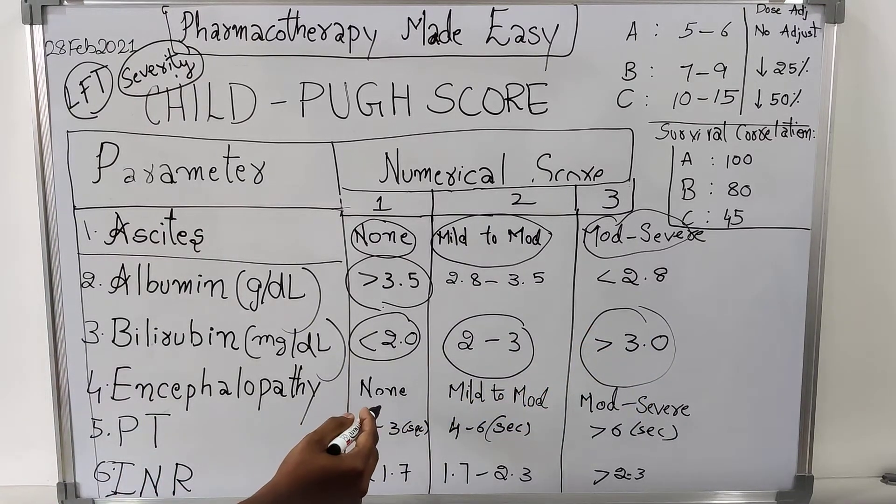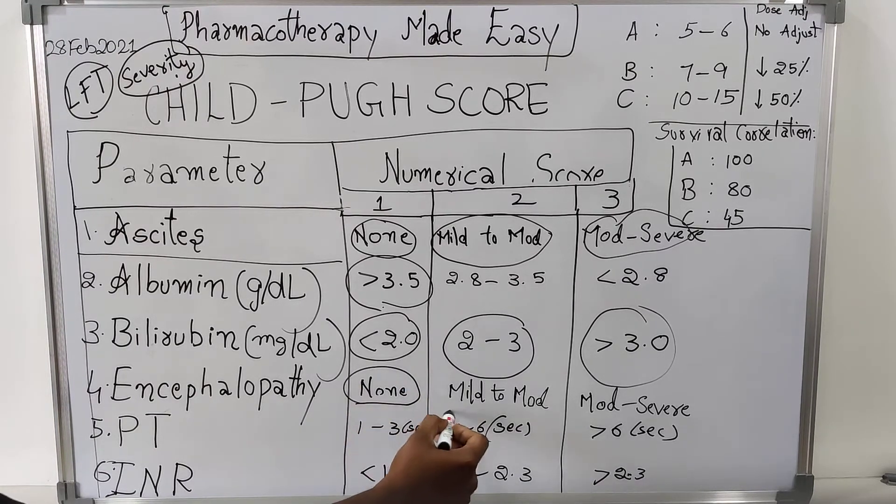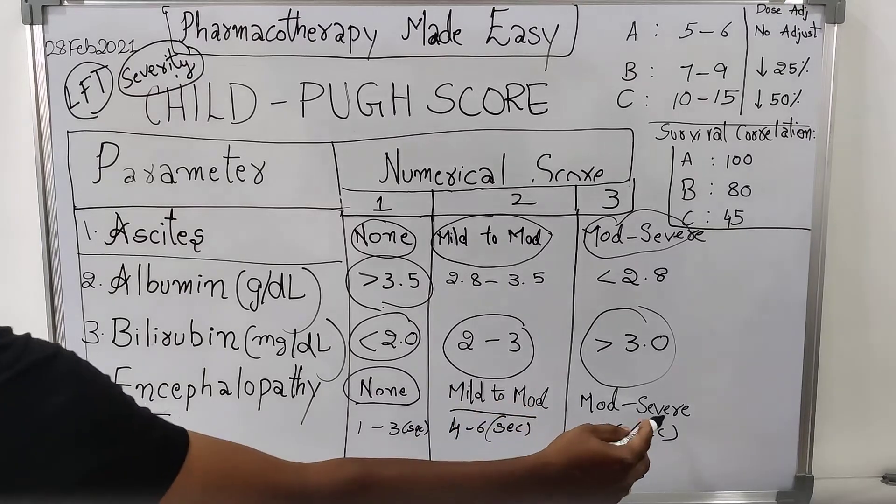And presence of encephalopathy: without any encephalopathy, score will be 1. Mild to moderate, score 2. Moderate to severe, score 3.